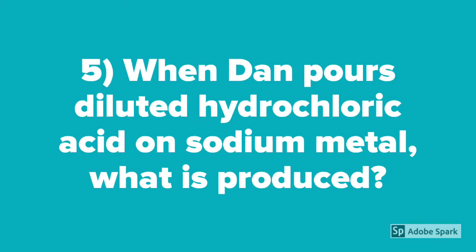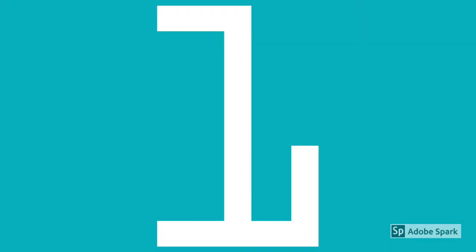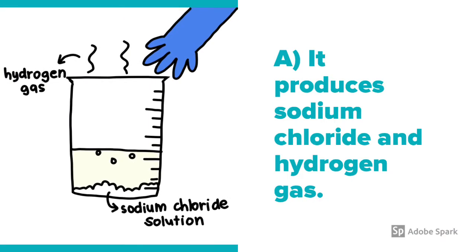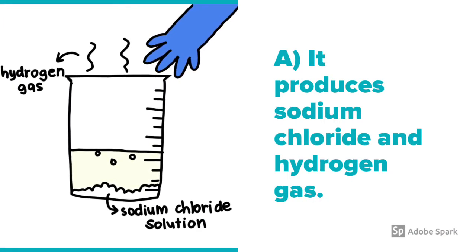Question number 5: When Dan pours hydrochloric acid on sodium metal, what is produced? This reaction produces sodium chloride and hydrogen gas.